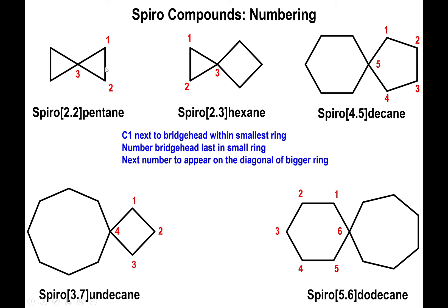From carbon 2 to 3 we're going up and to the left, so we label the corner up and to the left on the opposite ring as the next number. In another molecule, from 2 to 3 we go up and to the right, so we label that corner as 4. From 4 to 5 going up and to the left, that corner gets the next label. Going from 3 to 4 up and to the left, that corner is next; and from 5 to 6 going up and to the right, that corner is next. You have this almost infinity-sign trajectory for how you number all the carbons within these ring systems.